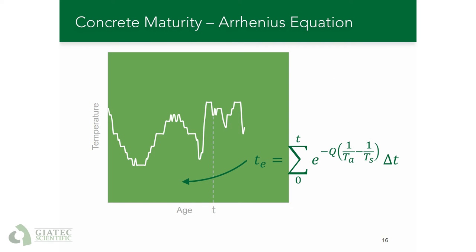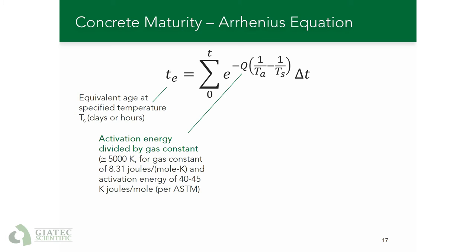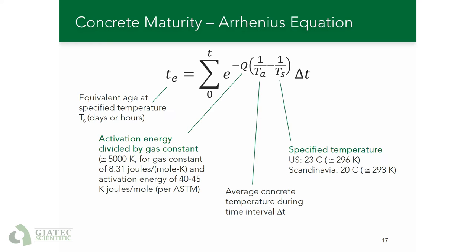The second method of measuring maturity index is based on the Arrhenius equation that describes the effect of temperature on the rate of a chemical reaction. Unlike the Nurse-Saul method, this method allows for taking into account the effect of temperature on the rate of strength development by introducing the concept of equivalent age. The actual age of concrete is converted to its equivalent age in terms of strength gain at a specified temperature. In this equation, T_E is the equivalent age at a specified temperature representing the maturity index, Q is the activation energy divided by the gas constant, T_A is the average concrete temperature during time interval ΔT, T_S is the specified temperature, and ΔT is the time interval.